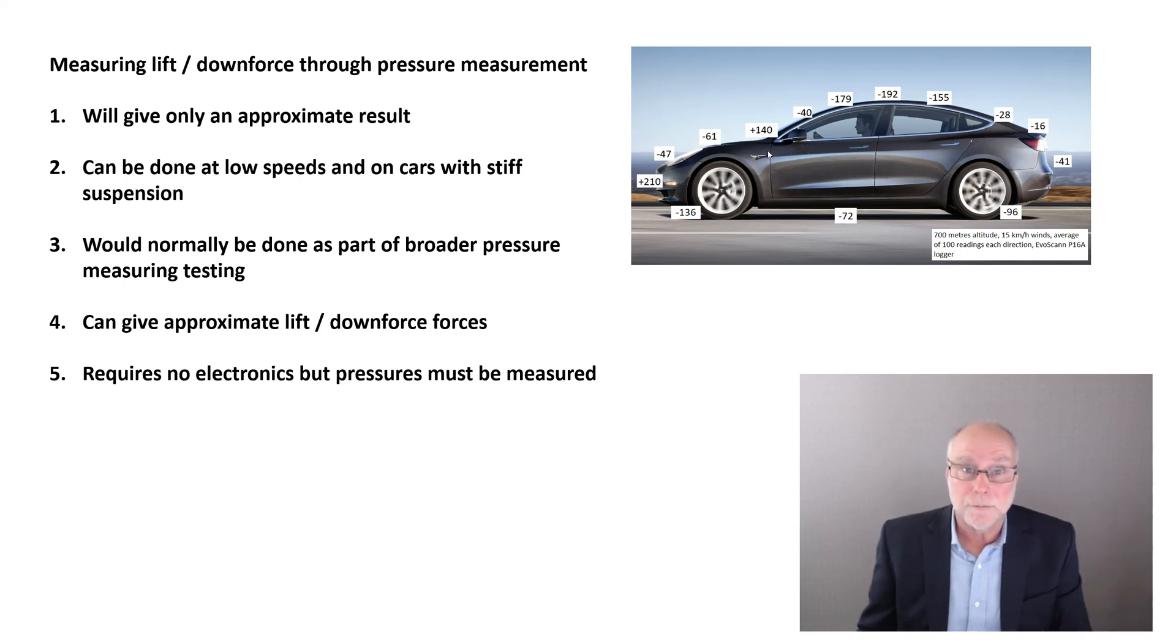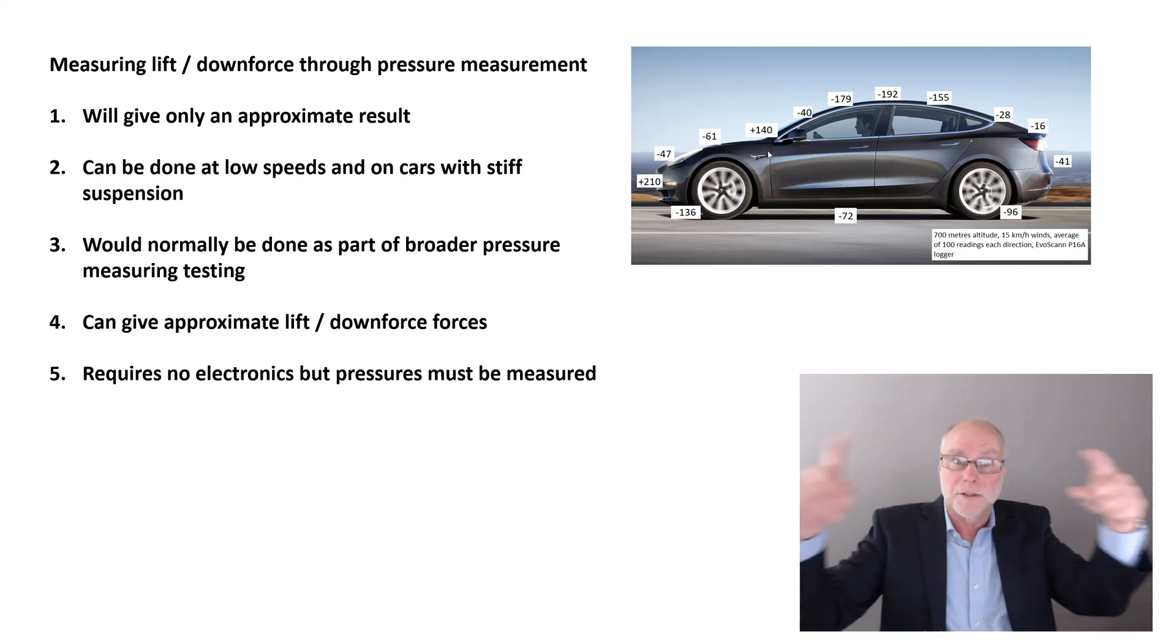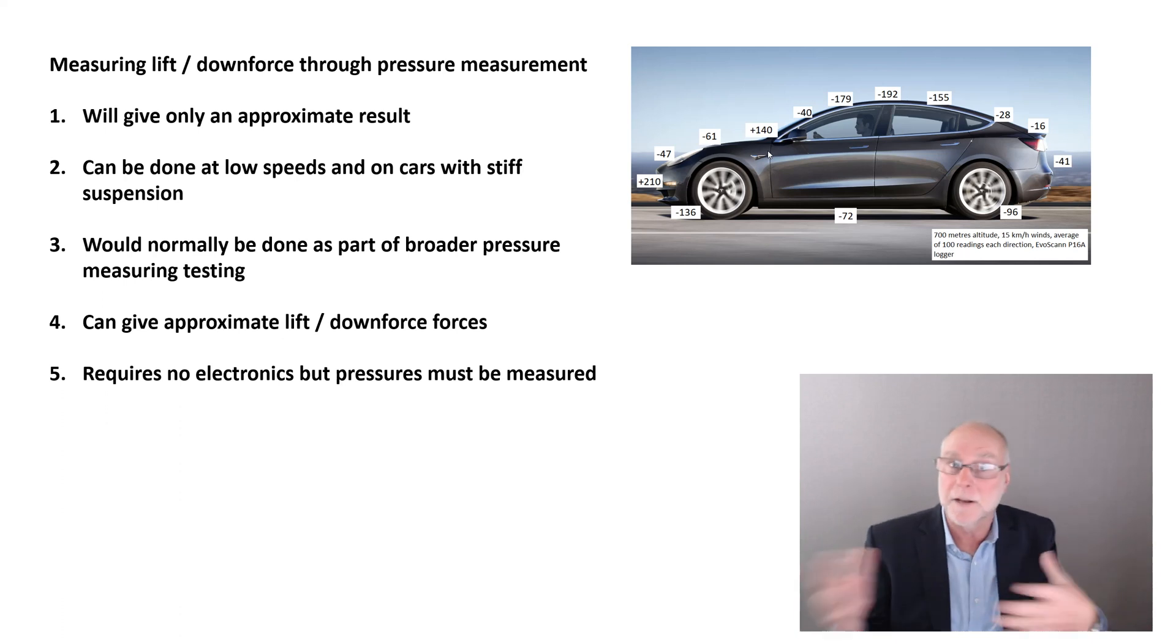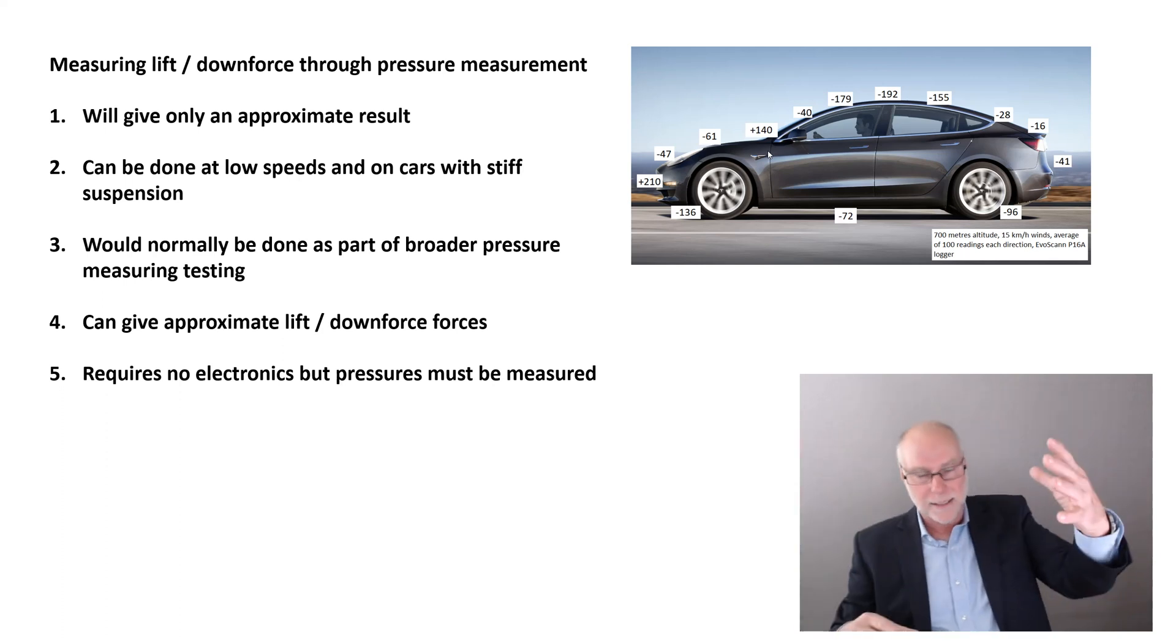But measuring pressures and working out if there's an overall lower pressure on top than underneath, in which case there'd be lift, or vice versa, in which case there'd be downforce, it can be done at relatively low speeds, and it can be done on cars with stiff suspension. But you would normally do this sort of measurement as part of a broader measurement process you're already doing. So you might be doing pressure measuring to see if an undertray is working, or something like that. And in that situation, you'd measure not only the undertray pressures, but you'd also measure the centerline pressures across the top of the car, so you'd be able to get a better feel for what was going on overall. But as I say, you would normally check if there's downforce or lift as part of a broader measuring process that you're already doing.